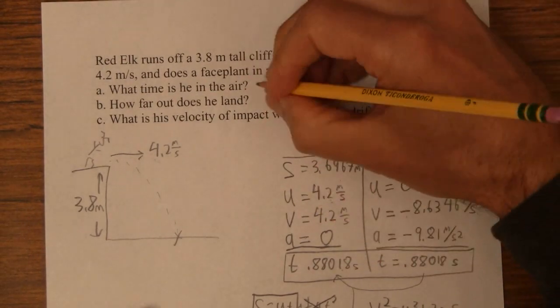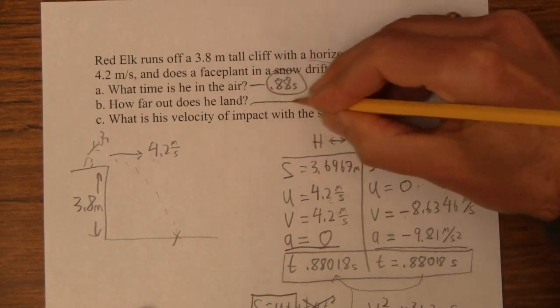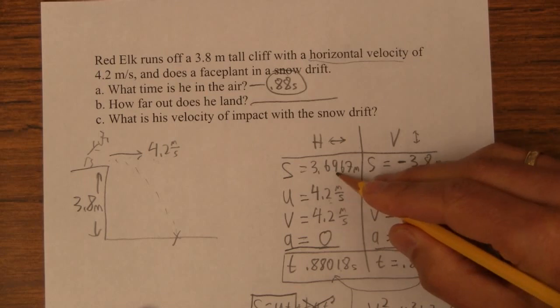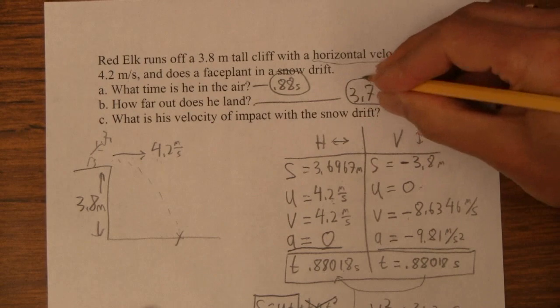What time is he in the air? Well, with two sig figs, I'd have to say 0.88 seconds. How far out does he land? I'd have to say with two sig figs, 3.7 meters.